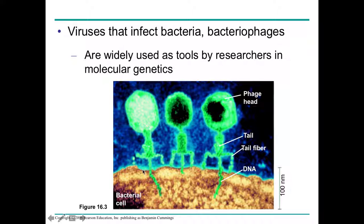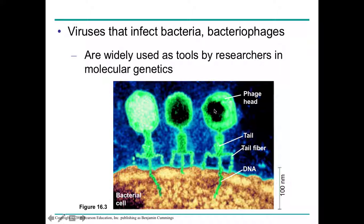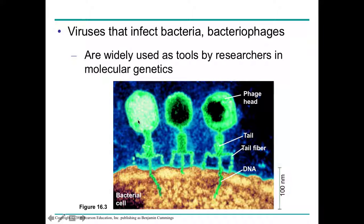These little guys are called bacteriophages — the green things on the screen are viruses. Their host cells are actually bacteria, not people or animals. They are used as tools by genetic researchers because we can actually see them. This brown part at the bottom is the cell, and these green things are the bacteriophage viruses infecting their host with their tail-like structures. Viruses are not technically living because they can't reproduce without a host. They're only made of a protein coat and DNA inside, which is important to know for the next experiment.